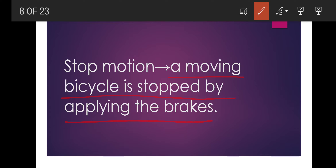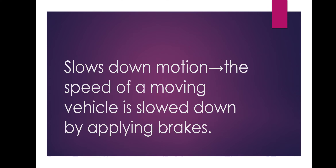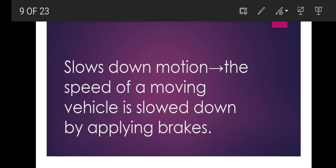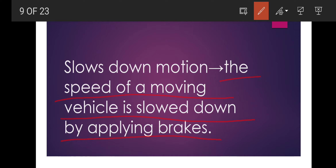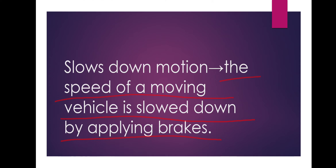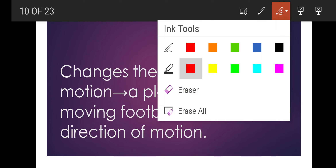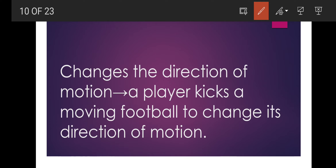These are easy answers so that you can get the exact answer without wasting your time and learn for the exam. For slows down motion, the answer is: the speed of a moving vehicle is slowed down by applying brakes. For changes the direction of motion: a player kicks a moving football to change its direction of motion.